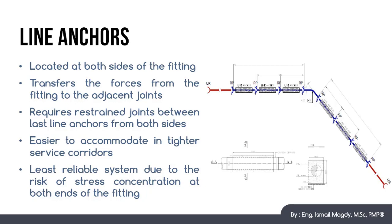This system is easier to accommodate in case of tight surface corridors. However, it is less reliable than the thrust blocks because you have to rely on the restrained joints here to transfer the loads from the bend to the line anchors and you will have the risk of excessive stresses at these joints.